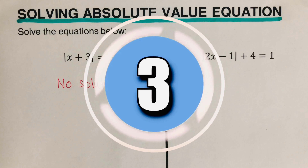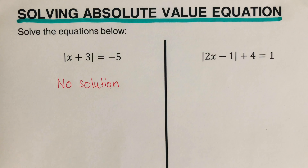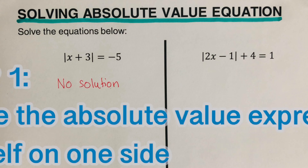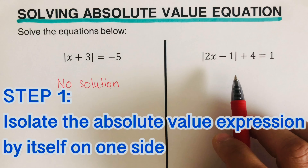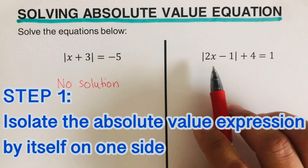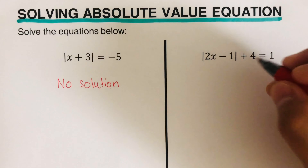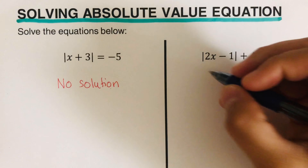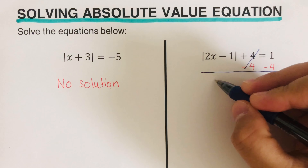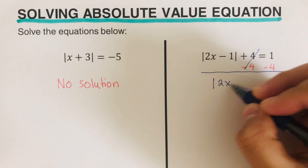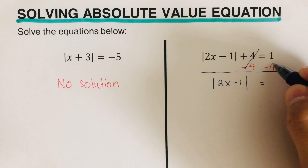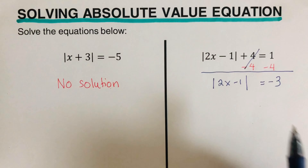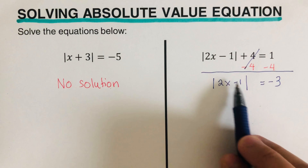The next problem is: absolute value of 2x minus 1, plus 4, equals 1. The first step is to isolate the absolute value expression by itself on one side. There is a +4 next to the absolute value, so we subtract 4 from both sides. We cross out the 4, and we are left with |2x - 1| = 1 - 4 = -3.